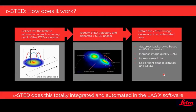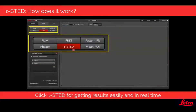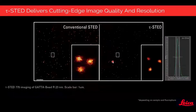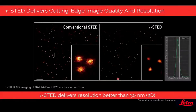How do TauSTED images look? Going back to our NPC sample, we can see the increase in resolution and signal-to-noise when we generate the TauSTED image. We can even push the resolution further — using GATTA beads containing ATTO 647N, which have a nominal size of 23 nanometers, and when we do a TauSTED experiment at 775 nm with the STED 775 line, we can get resolution better than 30 nanometers. So we can really push the resolution.